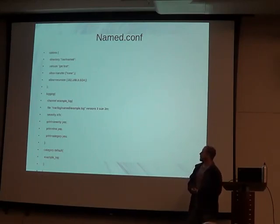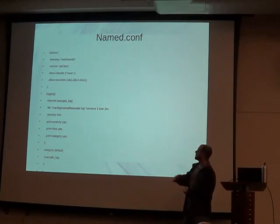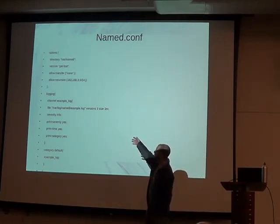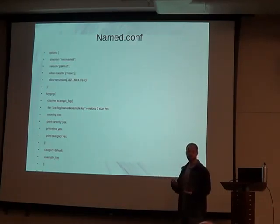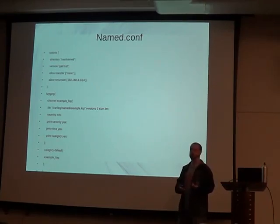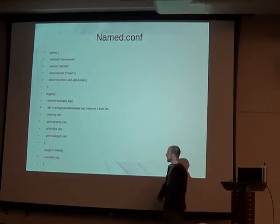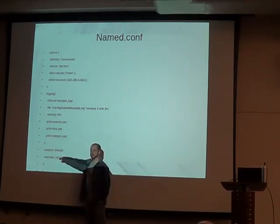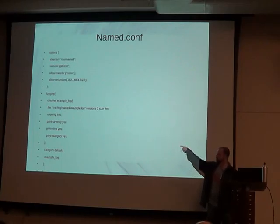You can set up logging to log exactly what you want. Logging is fairly simple — you can set this up for logging to syslog. This sets up a logging channel where you list the file, how many versions of that log file you want, and the size of it so you know when to rotate and delete old copies. The severity is what level of logs you want to save. Print-severity, print-time, and print-category are extra information added to each log line. Then the category 'default' means all default logging messages will go to that channel.